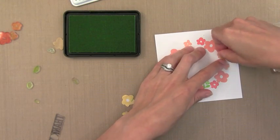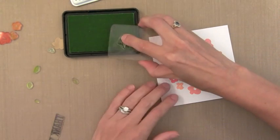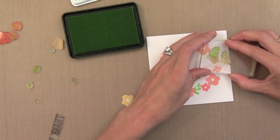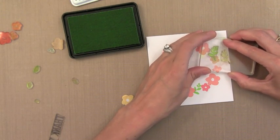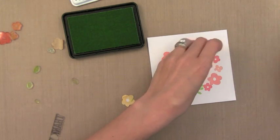So I use this bigger leaf stamp to kind of fill in the open areas that I don't have flowers in. So there's really no rhyme or reason to how I do this. I'm using the Hero Arts Green Hills Shadow Ink for this. It's a nice bright vibrant green.